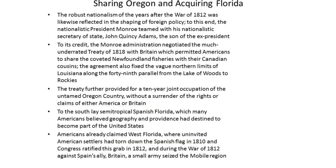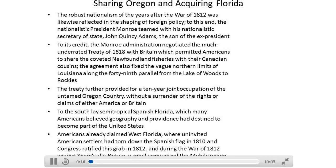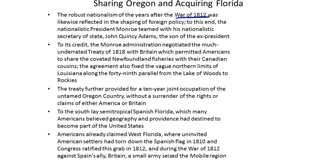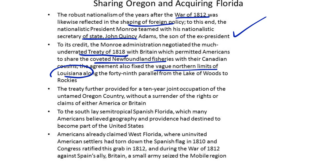Sharing Oregon and Acquiring Florida. The robust nationalism of the years after the War of 1812 was reflected in the shaping of foreign policy. The nationalistic President Monroe teamed with his nationalistic Secretary of State, John Quincy Adams, the son of the ex-president. The Monroe Administration negotiated the much underrated Treaty of 1818 with Britain, which permitted Americans to share the coveted Newfoundland fisheries with their Canadian cousins. The agreement also fixed the vague northern limits of Louisiana along the 49th parallel from the Lake of the Woods to the Rockies.